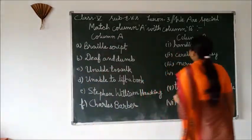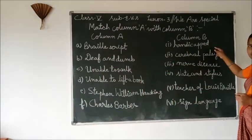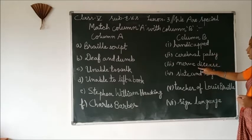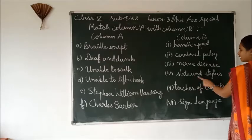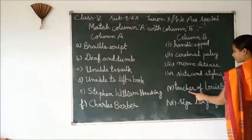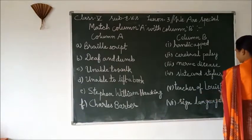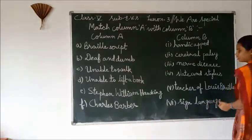Column B. 1: Handicap. 2: Cerebral palsy. 3: Nerve disease. 4: Slept and stylus. 5: Tichero, atrophy pole. 6: Band.